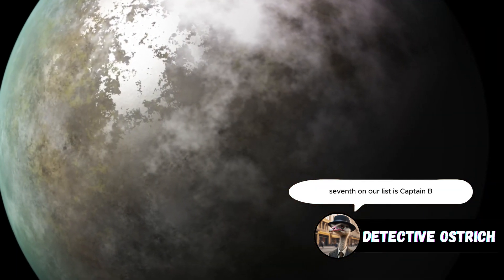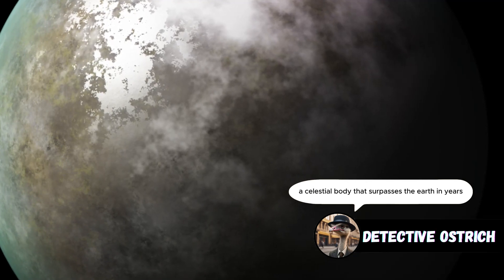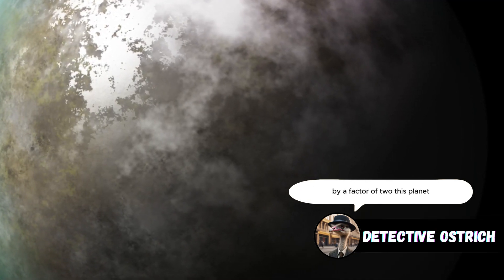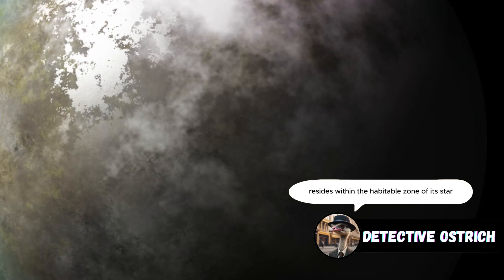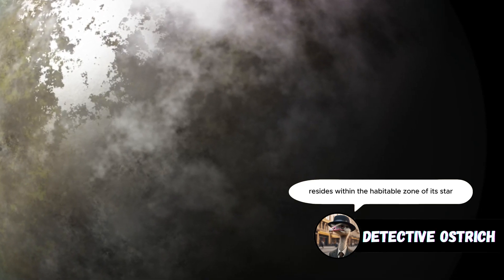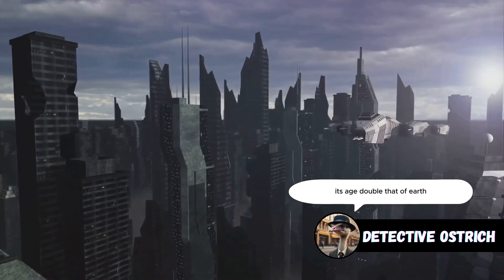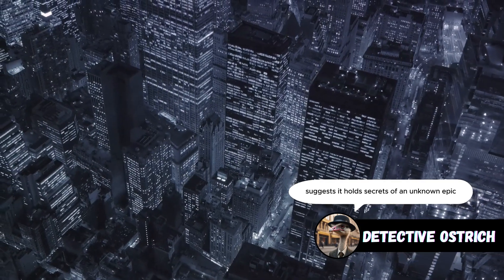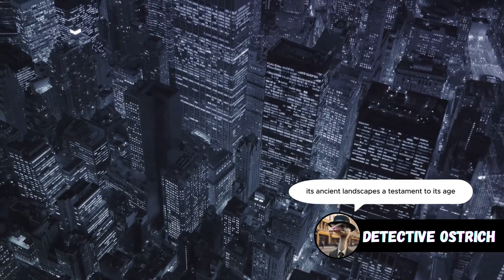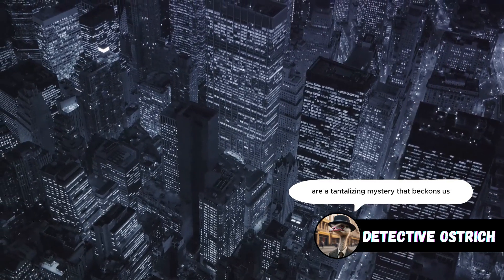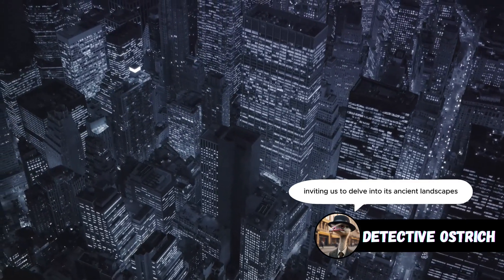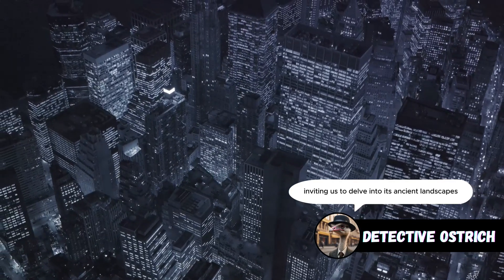Seventh on our list is Kepler-452b, a celestial body that surpasses the Earth in years by a factor of two. This planet resides within the habitable zone of its star, suggesting potential for life. Its age, double that of Earth, suggests it holds secrets of an unknown epoch. Its ancient landscapes are a tantalizing mystery that beckons us to explore.